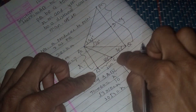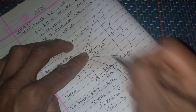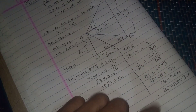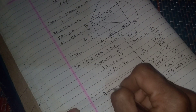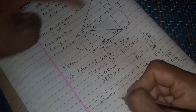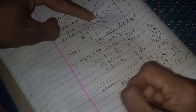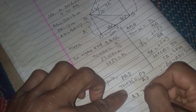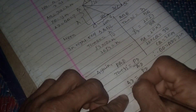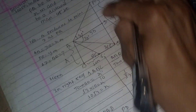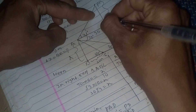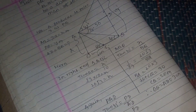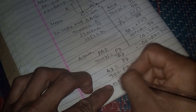Therefore BQ equals 30 meters. CQ equals 20 meters. Now in right angle triangle PAD, using 45 degrees: tan 45 equals PD divided by AD equals 1, so PD equals AD equals 30 meters.